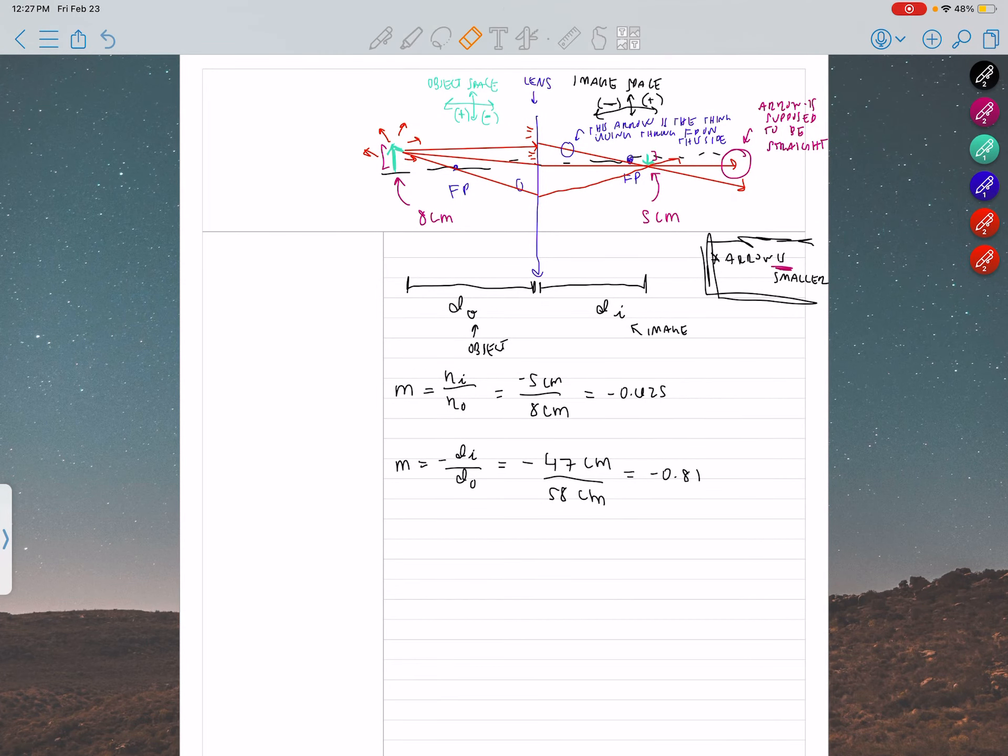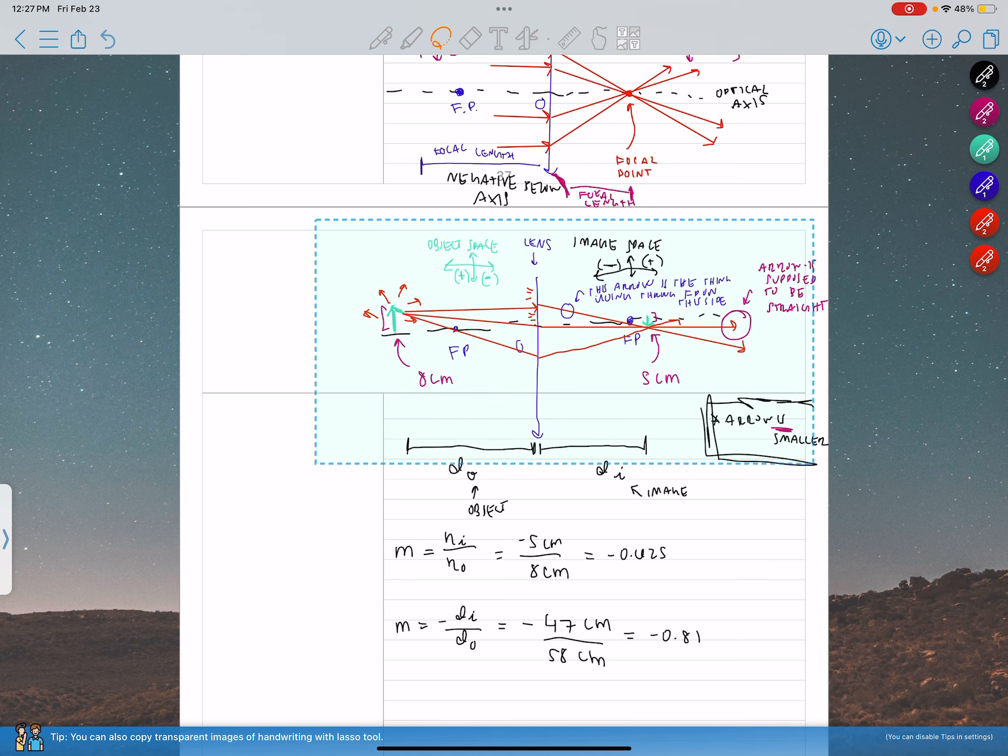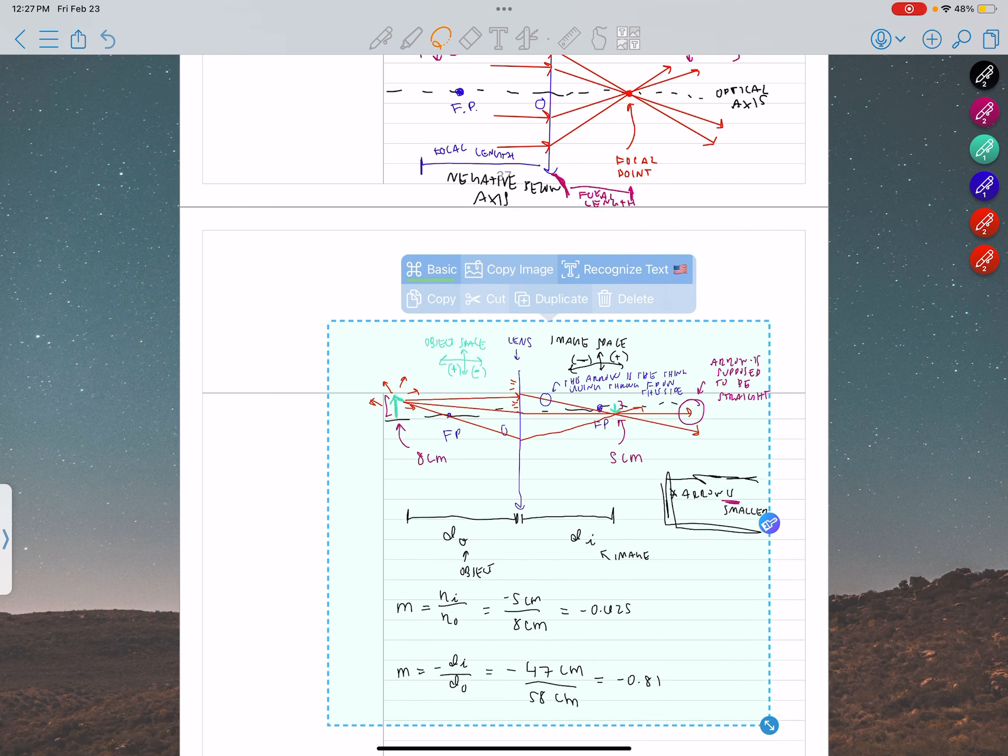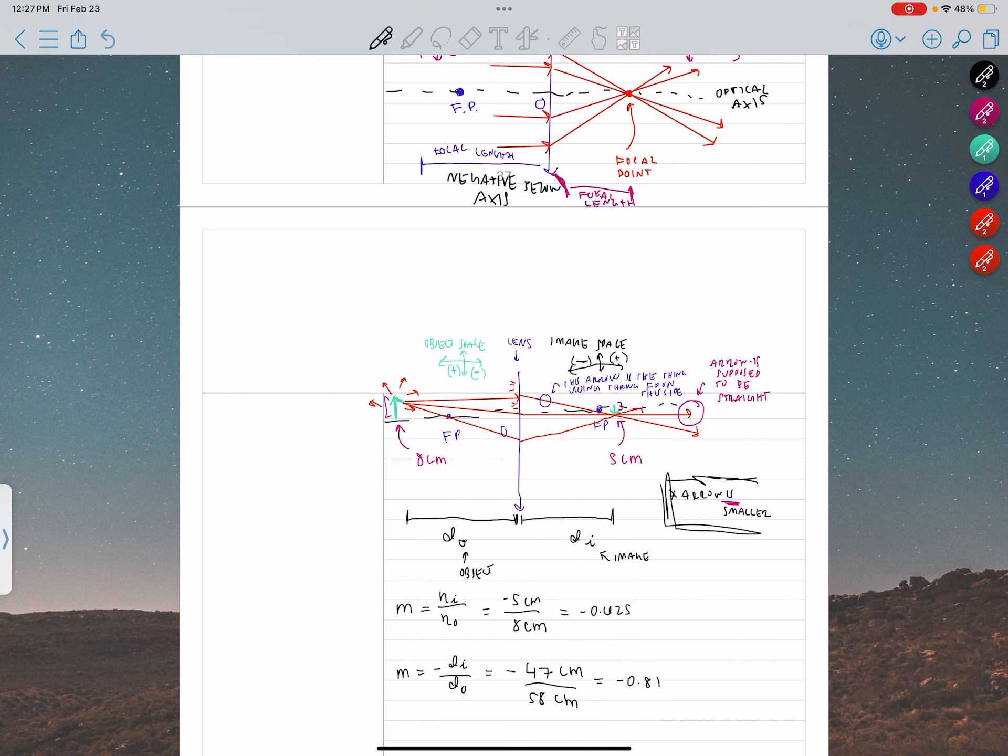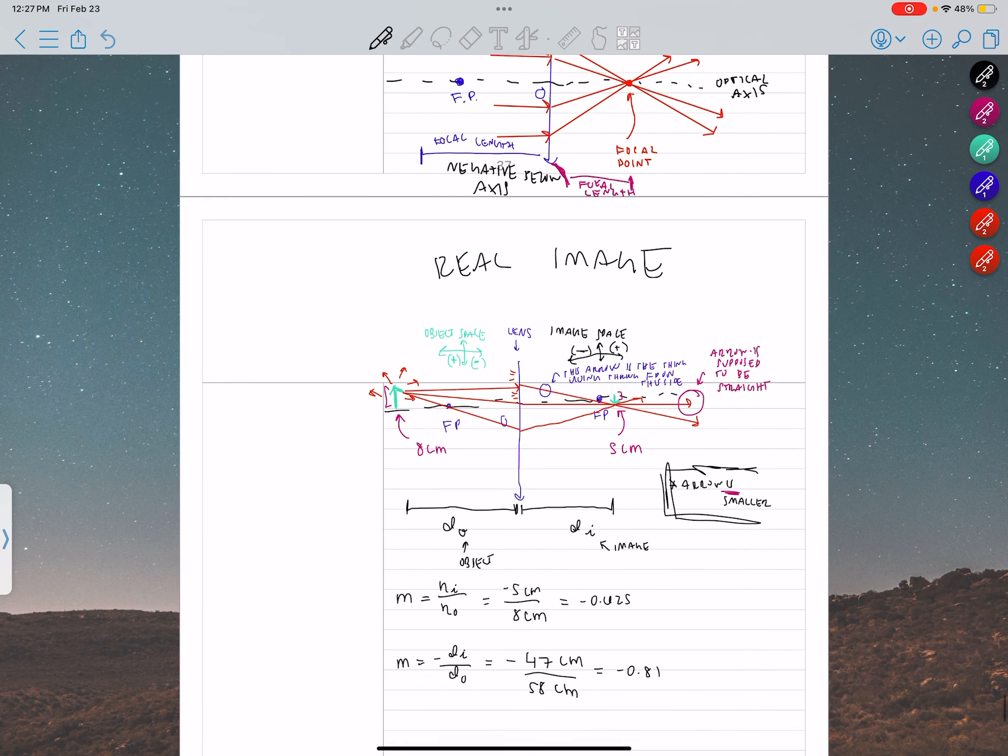Okay, real images are always going to be flipped. Always. And you're always going to have the object and image on opposite sides of the lens.